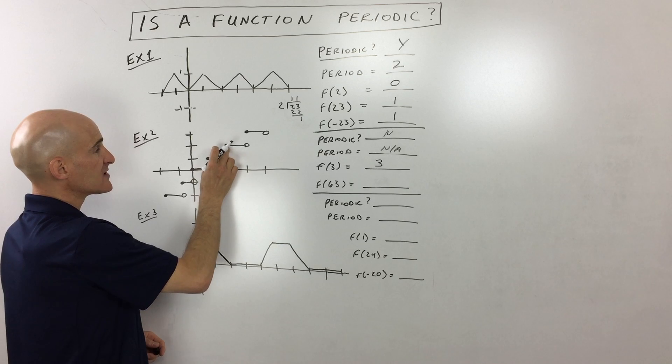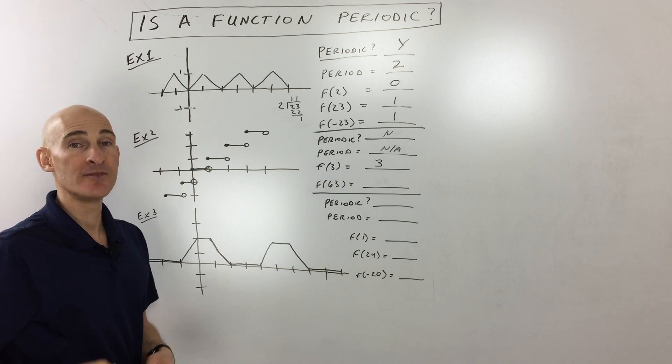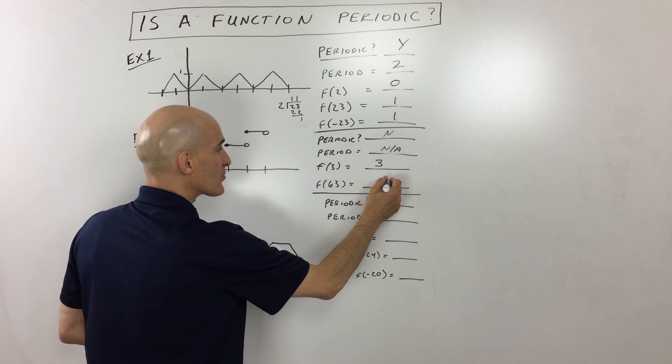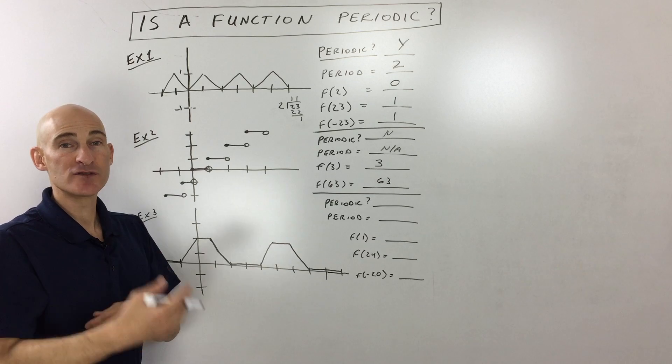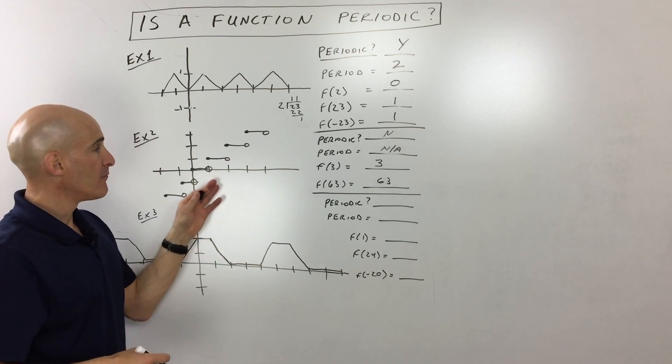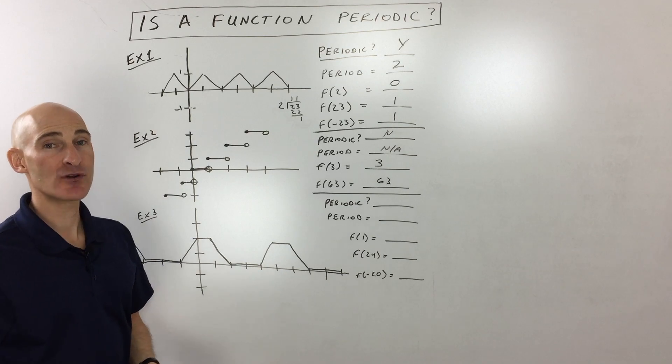What's f of two? Well, you can see it's two. What's f of one? It's one. So what do you think f of 63 would be? Well, it's going to be 63. So this one was not periodic, but we can still calculate what those values are by noticing the pattern. It's just not a repeating pattern. So it's not periodic.